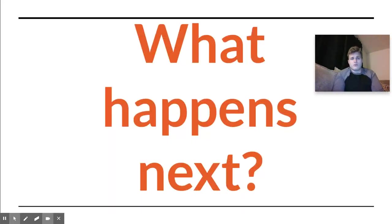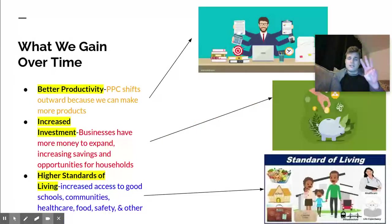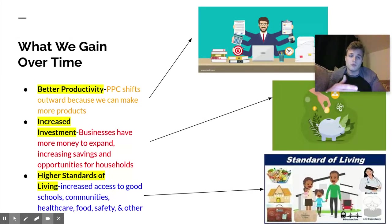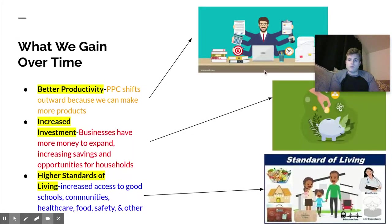Now that we've looked at why this diagram exists, there are three key economic benefits that happen when we operate in the factor market. First, there's better productivity. Our national PPC — production possibility curve — shifts outward when we are able to produce more things. We work harder, better, and smarter, and because of that, we're able to make more products.